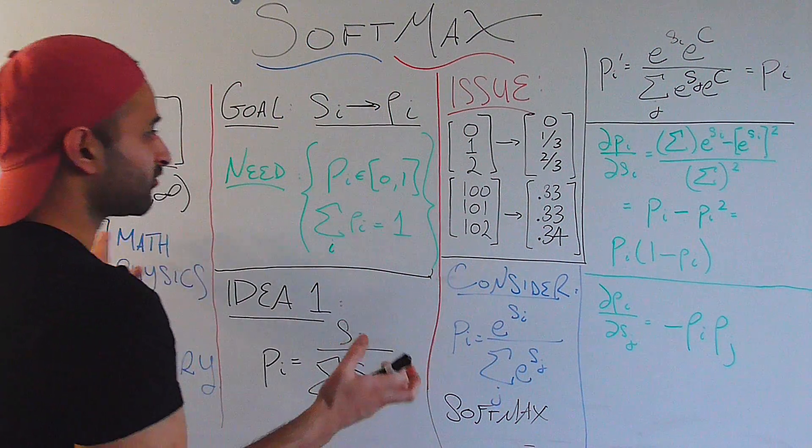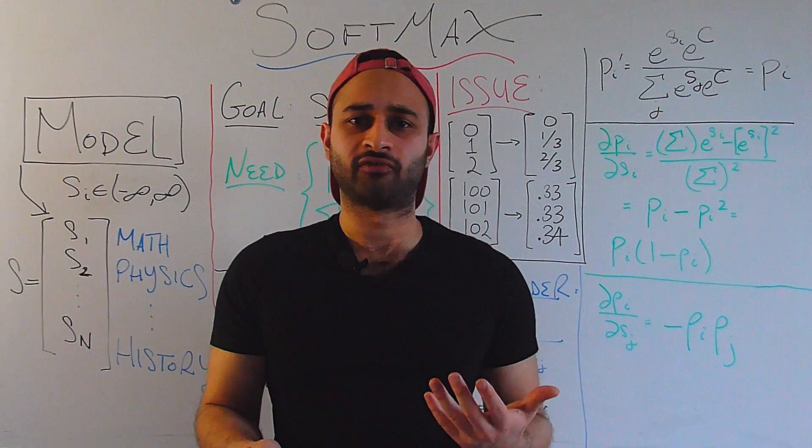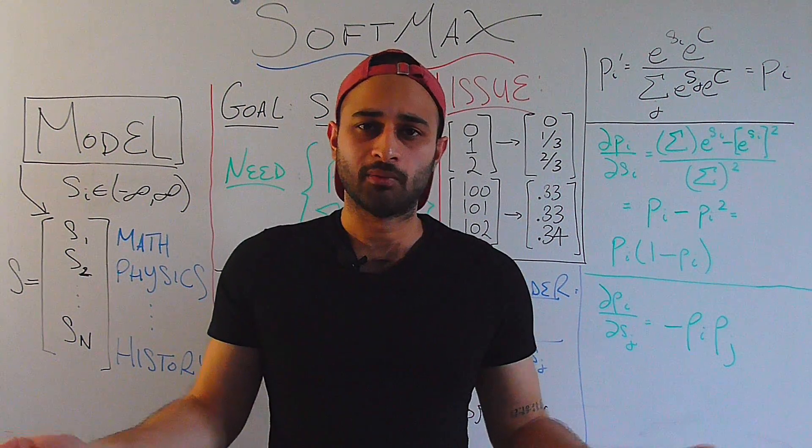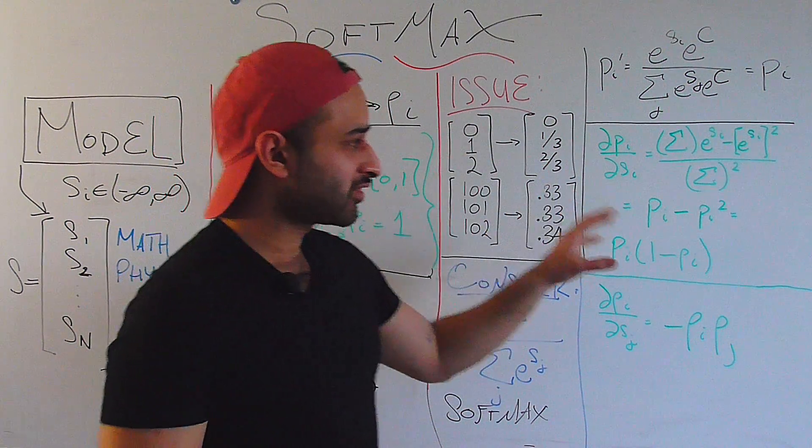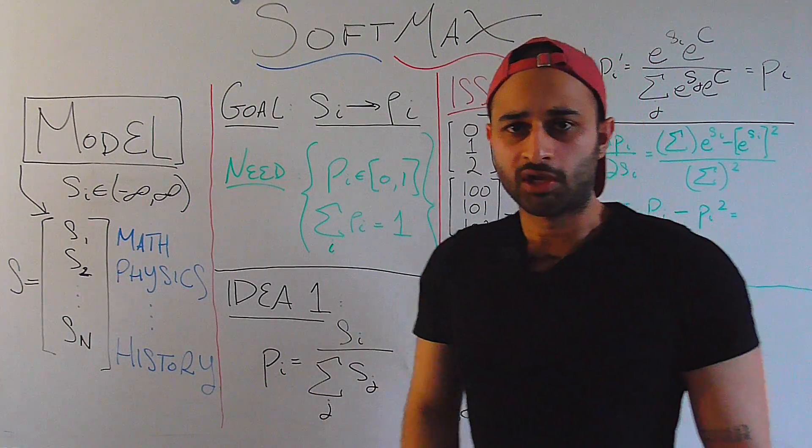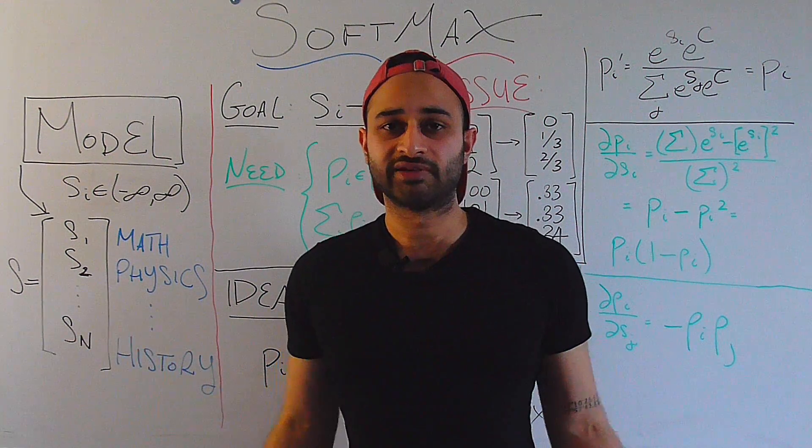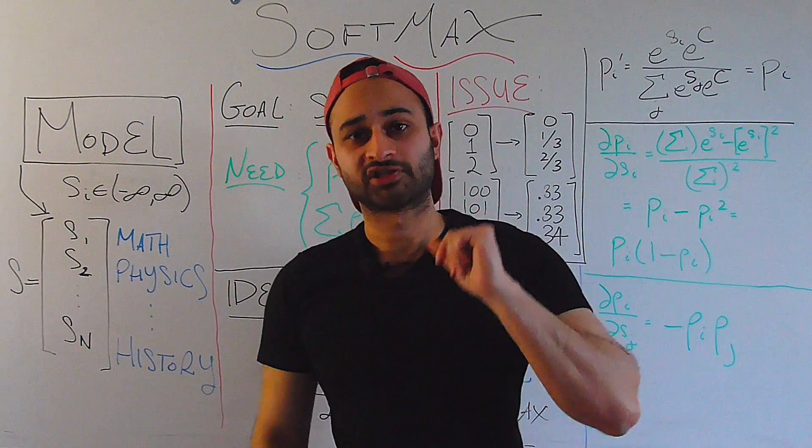So this is basically the softmax function. At its heart, it's just a multi-dimensional version of the sigmoid. But it is helpful to see exactly what's going on in terms of the math, and why we choose this formulation instead of this guy over here. So if you have any questions at all, please leave them in the comments below. Like and subscribe for more videos just like this. And I'll see you next time.